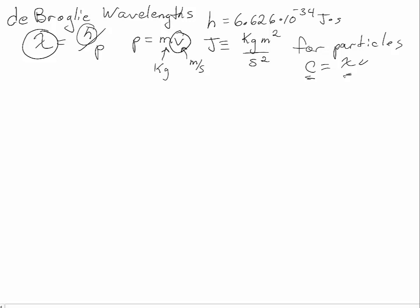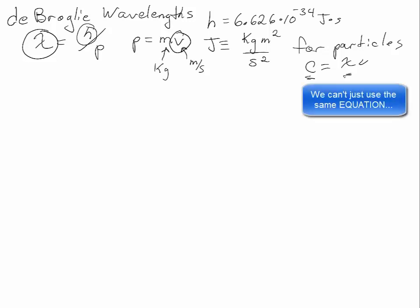light had its own equation where c equaled lambda nu for relating the speed and the wavelength of light. In this case for particles, the speed and the de Broglie wavelength, we can't just use the same equation that we could use for light.